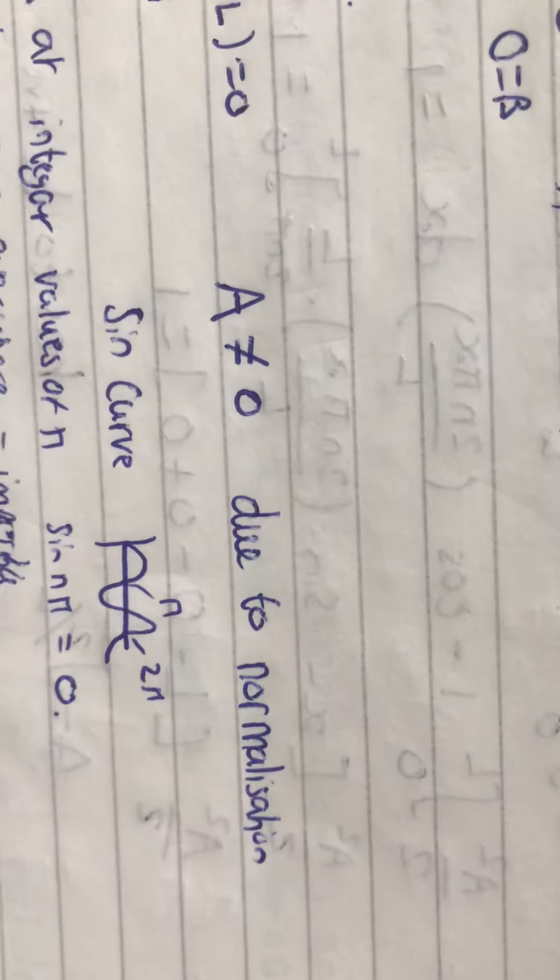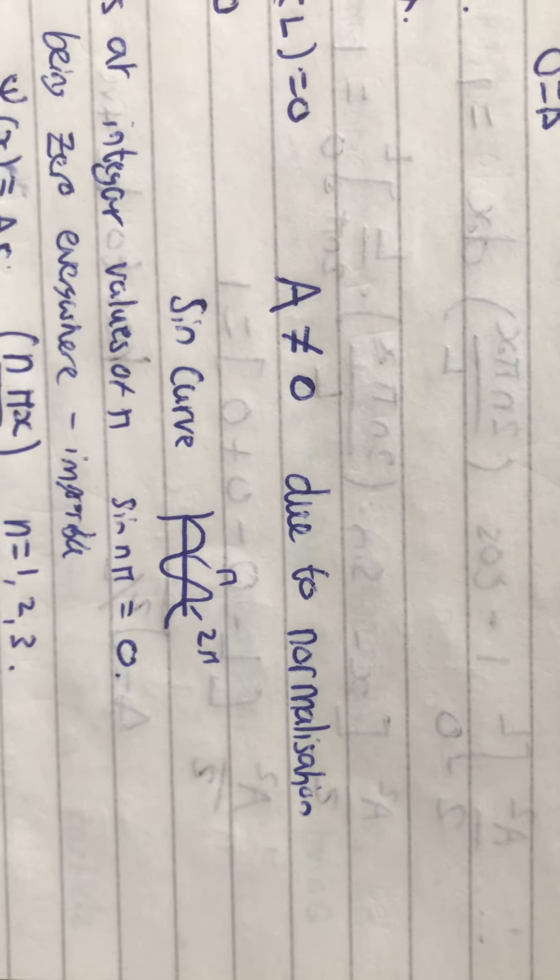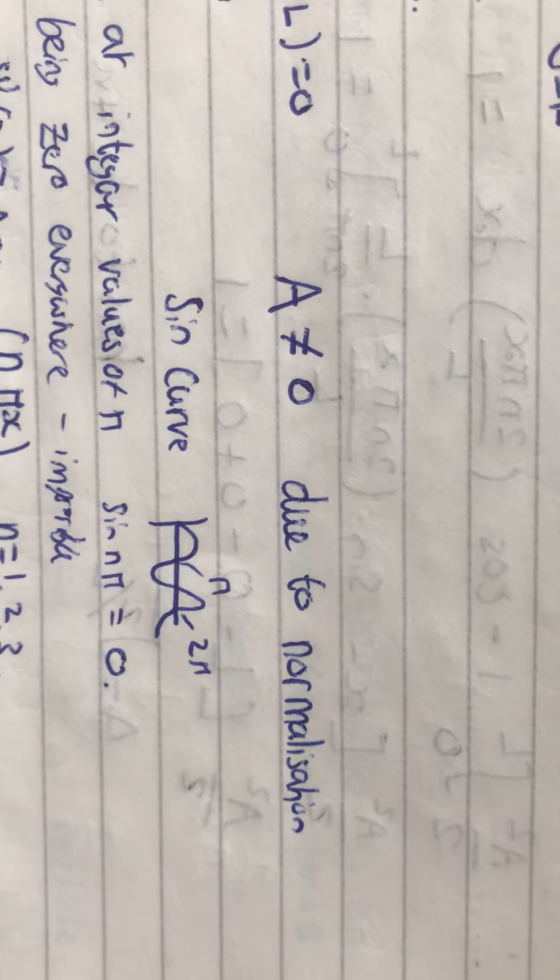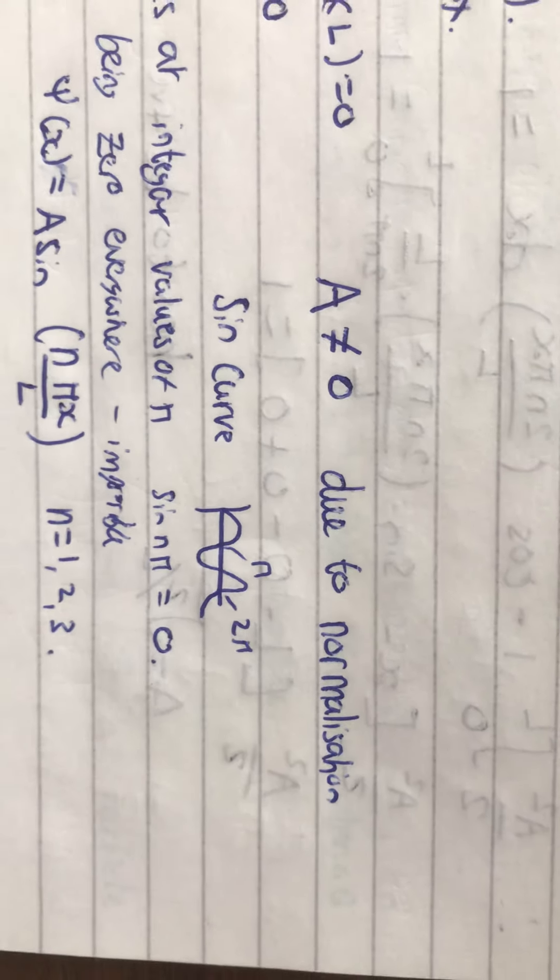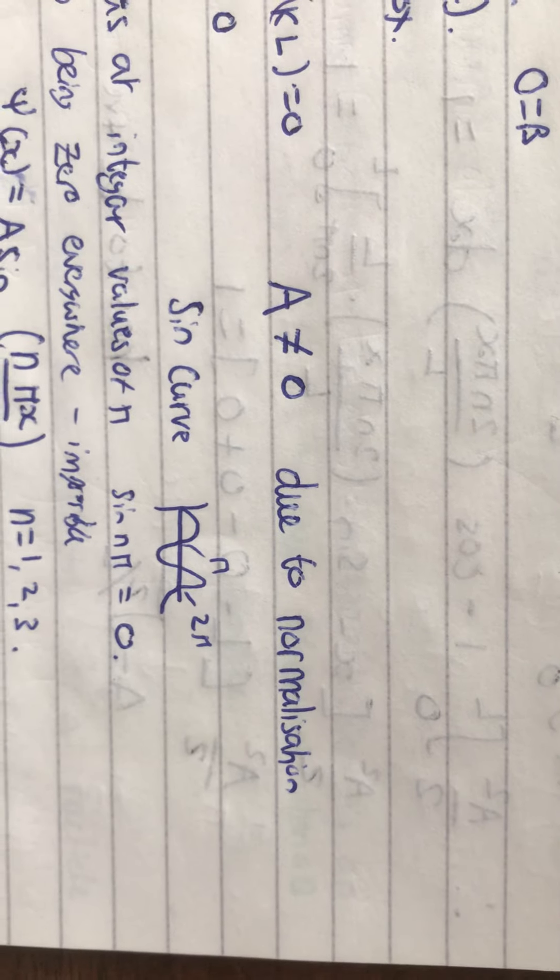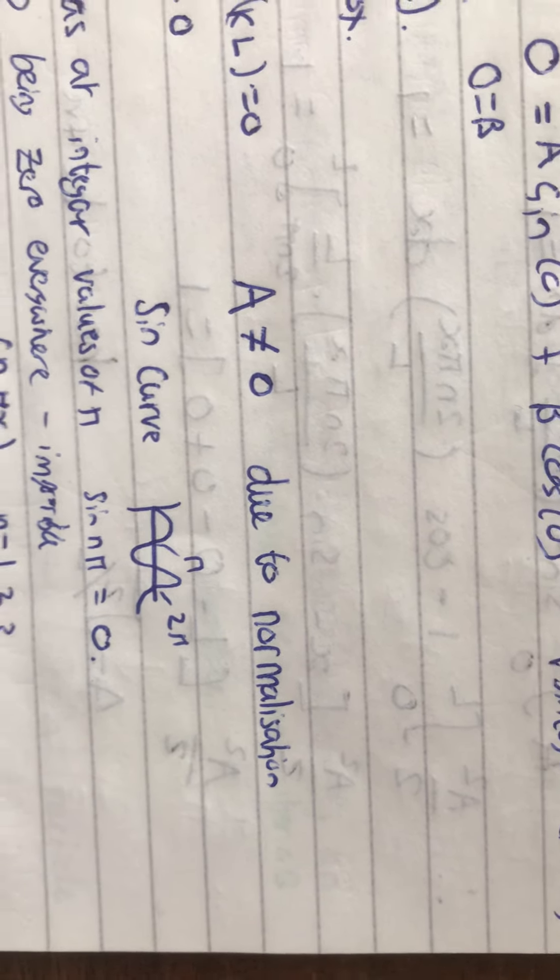So, yeah, if a was equal to 0, then we wouldn't get any normalization, which is what we need for the particle to exist in the box, I believe.